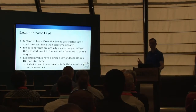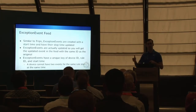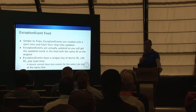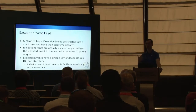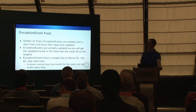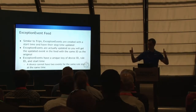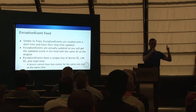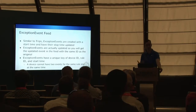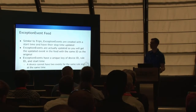Exception events work much the same way — they have a start and end time, and the end time gets extended as more data arrives. They're a bit easier to deal with because exception events are actually updated in the database. You'll get an exception event with ID 1 and version 1, and later get the same ID 1 but version 2, so you know to replace it. Sometimes we do delete exception events — if an event spans a long time and new data shows there should actually be two events with a gap in the middle, we delete the existing one. The unique combination for exception events is device ID, rule ID, and start time.